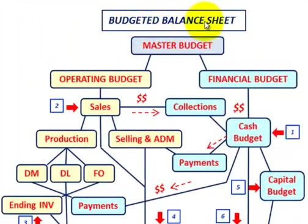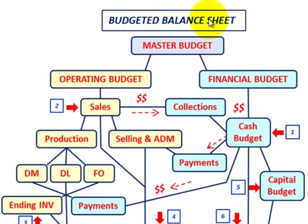What we're going to be going over here is the budgeted balance sheet. We're going to look at just an overview of what's included — we're not going to go into any great detail on the numbers that would be included here, but we'll look at how we'd set it up and what we would include.